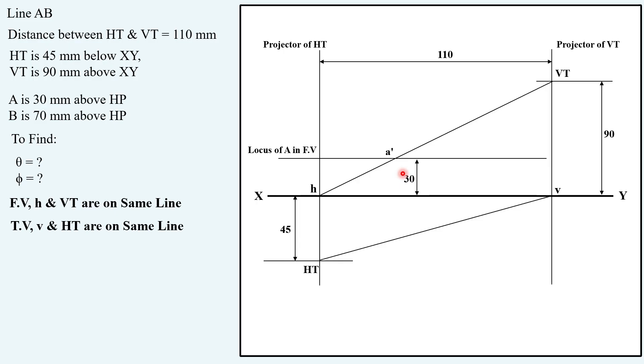And this is the locus of A in front view so I can draw vertical projector. Similarly I can take 70 mm above HP locating another locus of endpoint B, locus B in front view, and this is the B dash.